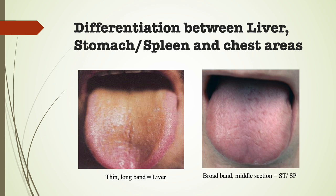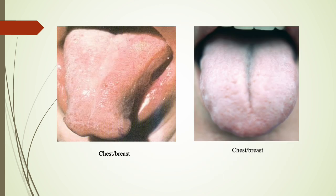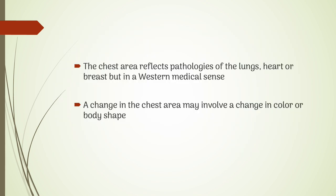A thin long band represents liver involvement. The image beside it shows a broad band in the middle section, representing the stomach or the spleen. Here is an example of a tongue picture representing the chest or breast. The chest area reflects pathologies of the lungs, heart, or breast in a Western medical sense.